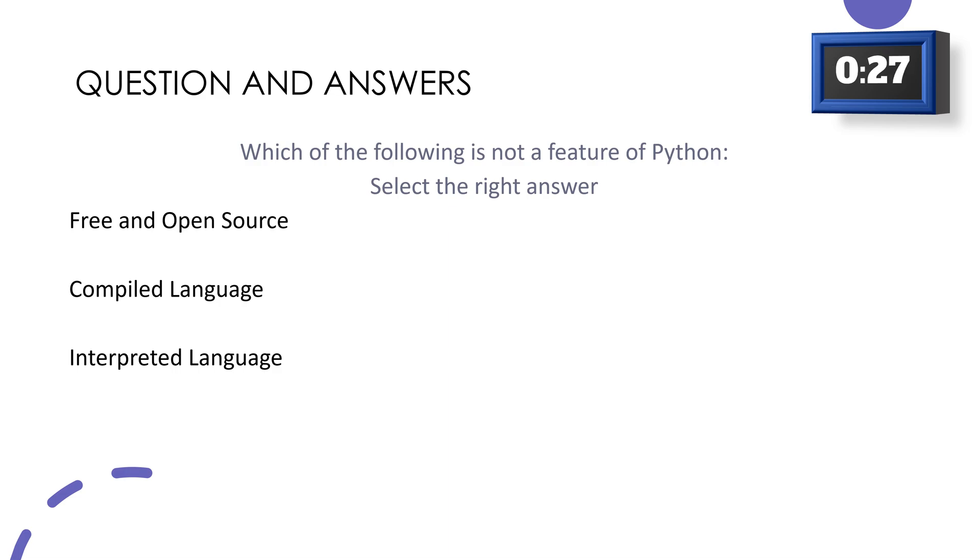The first question is, Which of the following is not a feature of Python? Select the right answer. Is it free and open source? Is it compiled language? Or is it interpreted language?